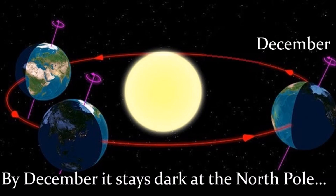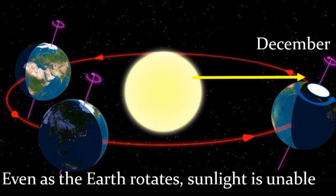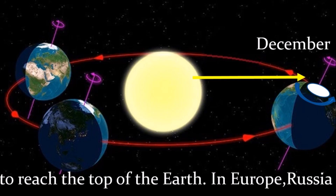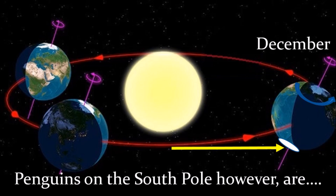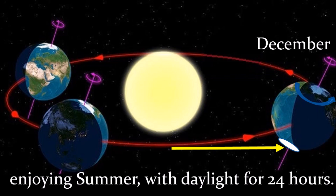By December, it stays dark at the North Pole. Even as the Earth rotates, sunlight is unable to reach the top of the Earth. In Europe, Russia, Alaska and Canada, days are short and nights are long. Penguins on the South Pole, however, are enjoying summer with daylight for 24 hours.